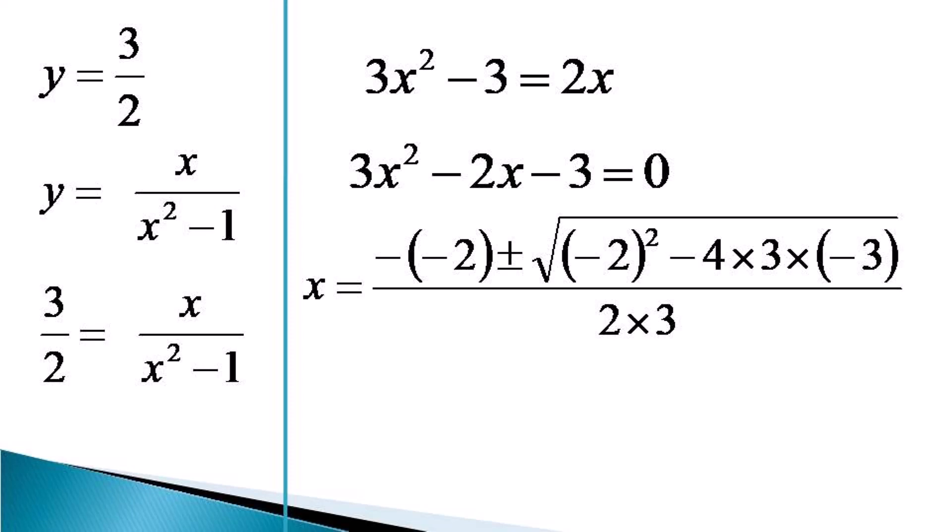To get the value of x as being equal to [-(-2) ± √((-2)² - 4(3)(-3))] / 2(3), which gives us the values of x as equal to (1 ± √5)/3 after some simplifications.